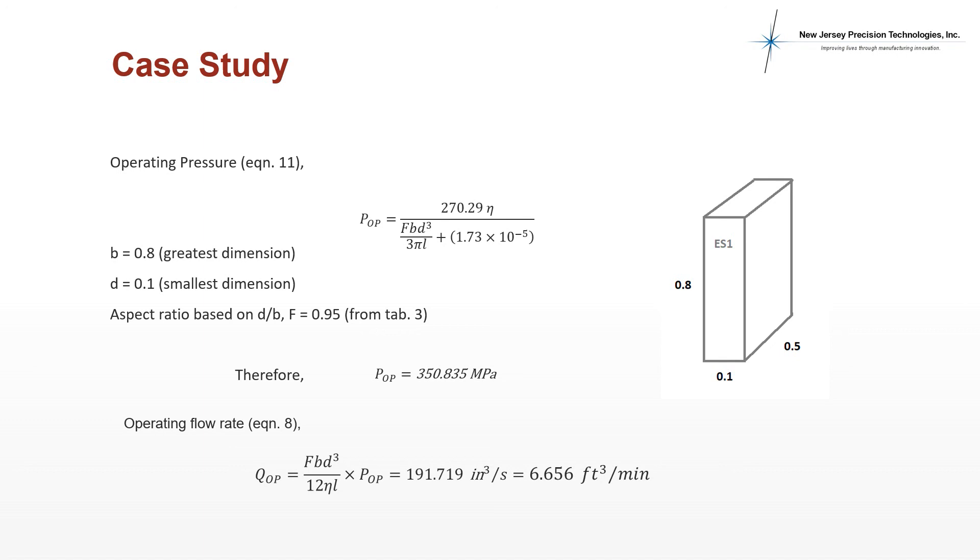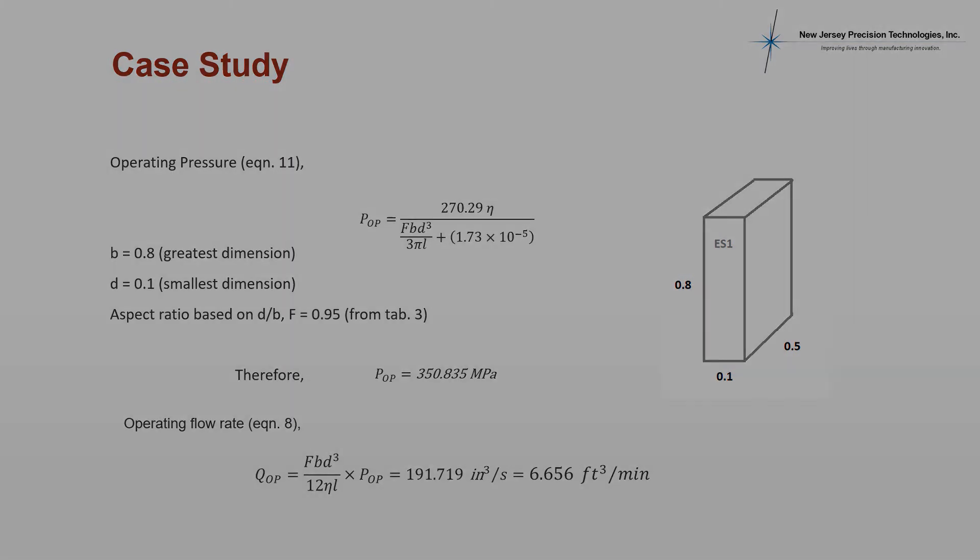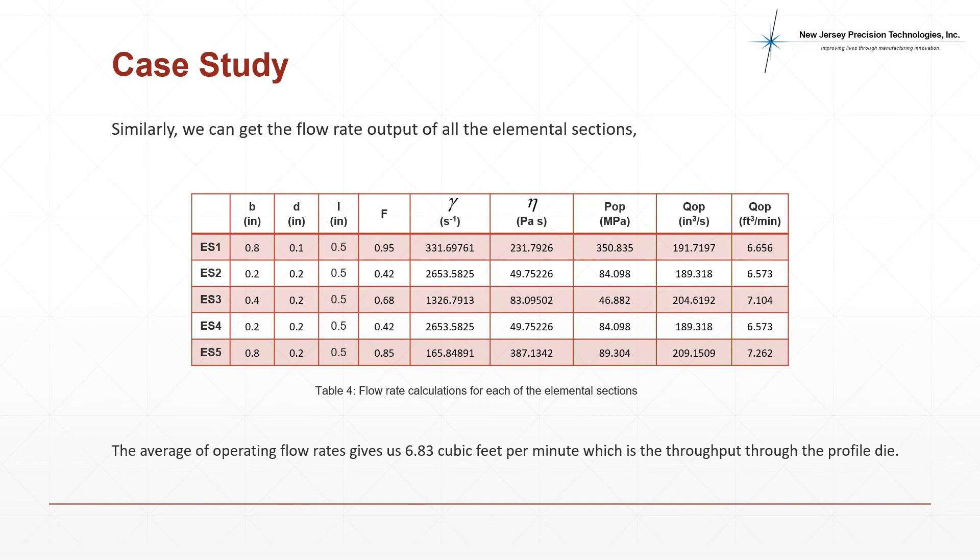Next, using equation 8, we can determine the output flow rate through elemental section 1 of the die. Similarly, the output flow rate can be calculated for all the elemental sections that the profile was divided into, and an average of all the flow rates will give us a throughput through the profile extrusion die.